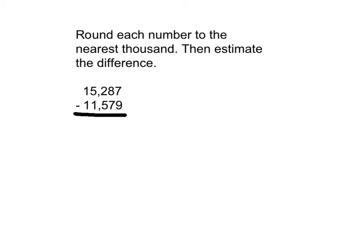So we'll take that first number, 15,287, and round it to the nearest thousand. That would be 15,000. Next, we take the other number, 11,579, and we also round that to the nearest thousand. That would be 12,000.